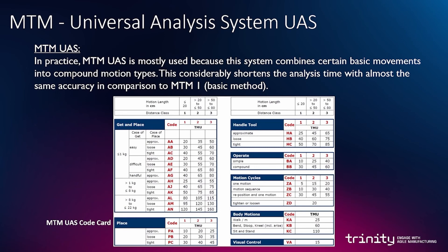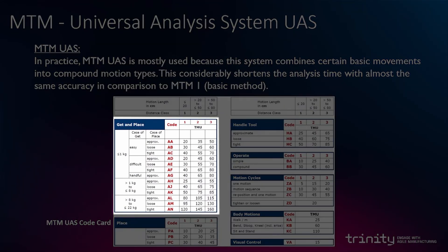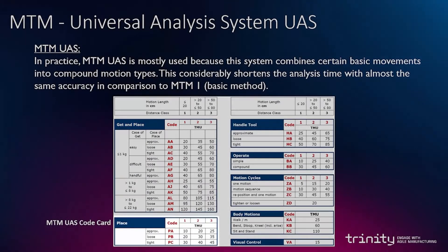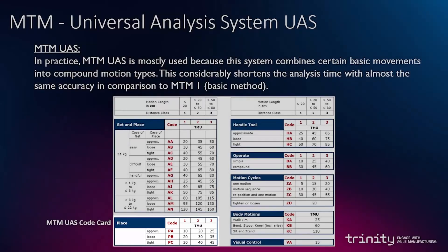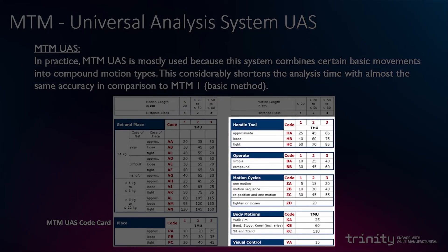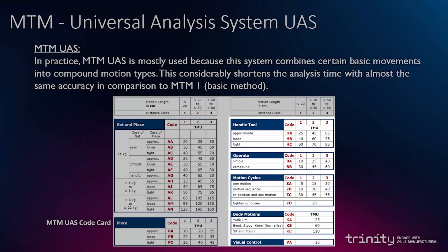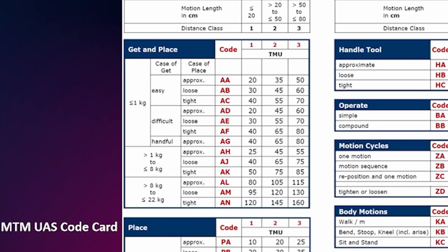For example, the first area of the code card covers movements for get and place, the second one is for additional place and handling tools, up to visual control. The columns represent distances — for example, the first column covers zero up to 20 centimeters for reach and bring, the second column covers between 20 and 50 centimeters, and so on.